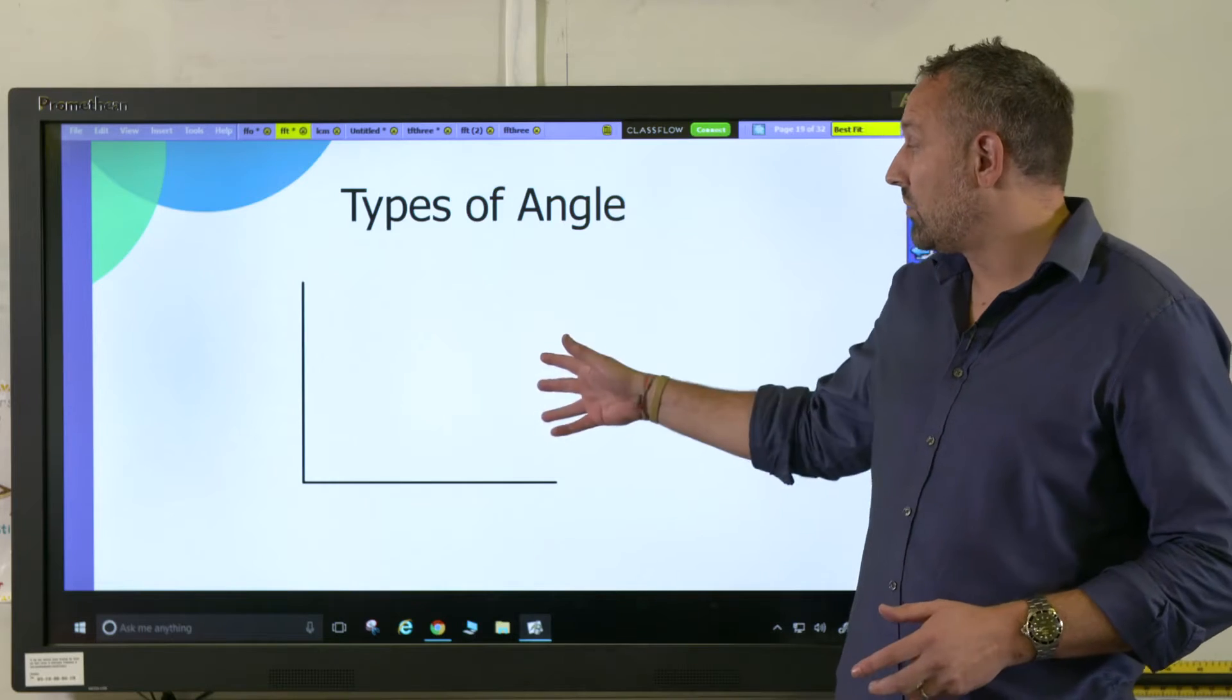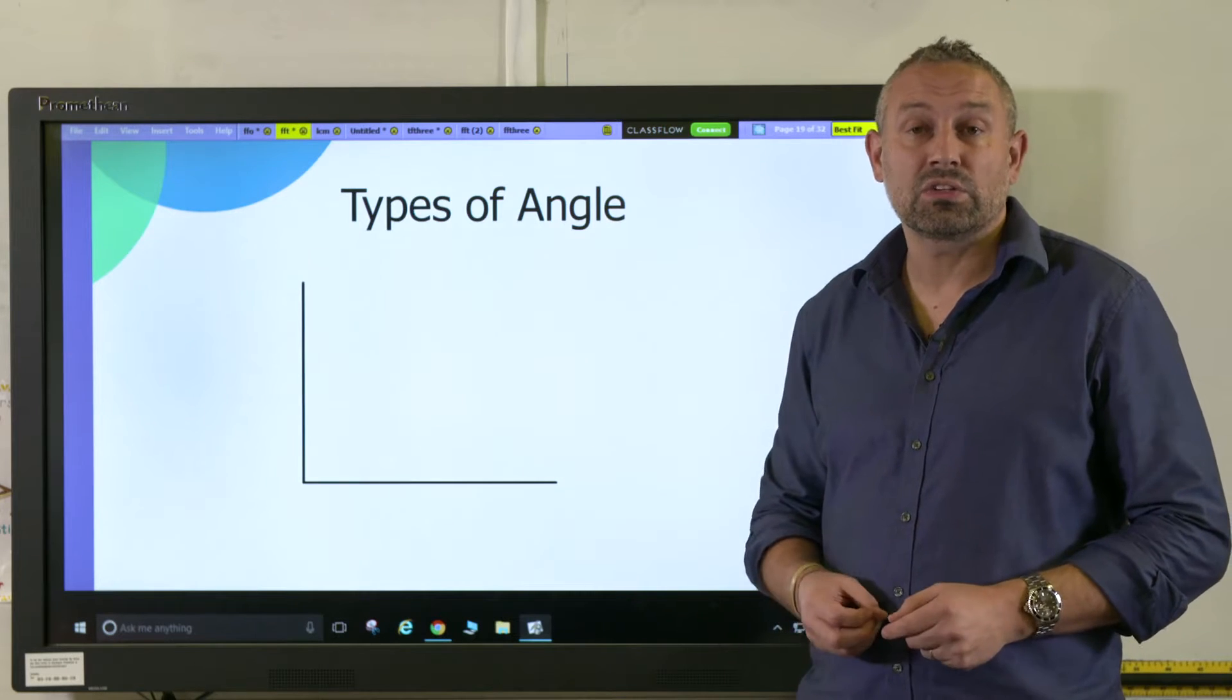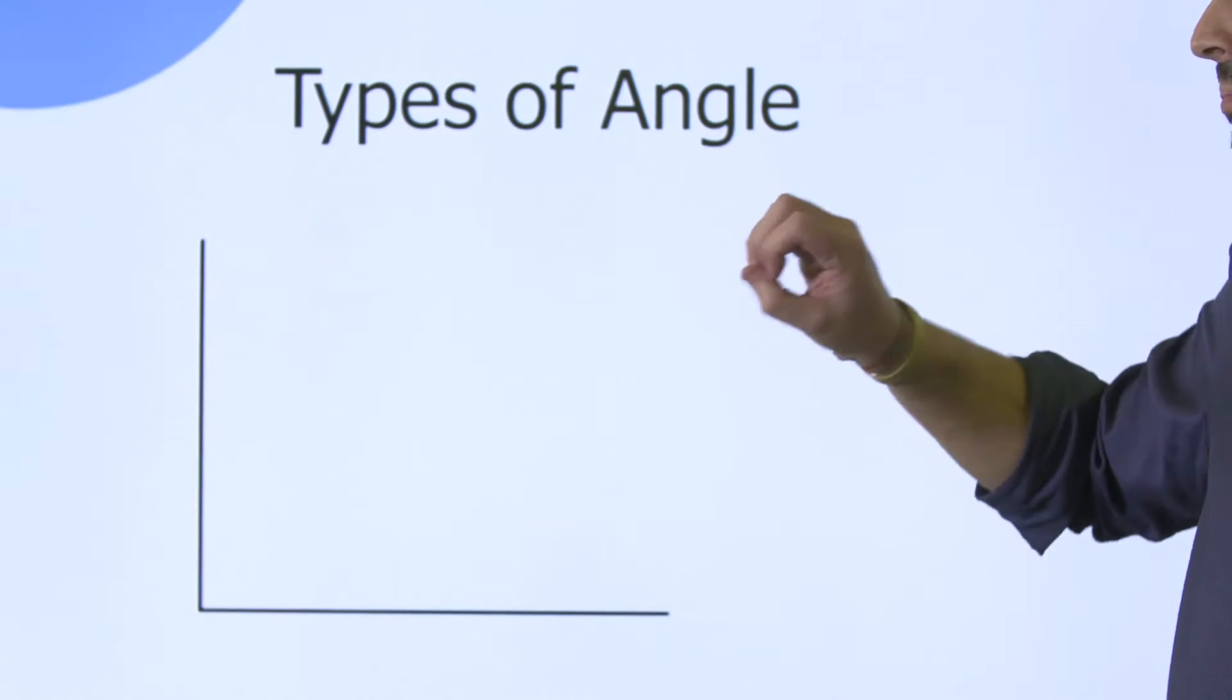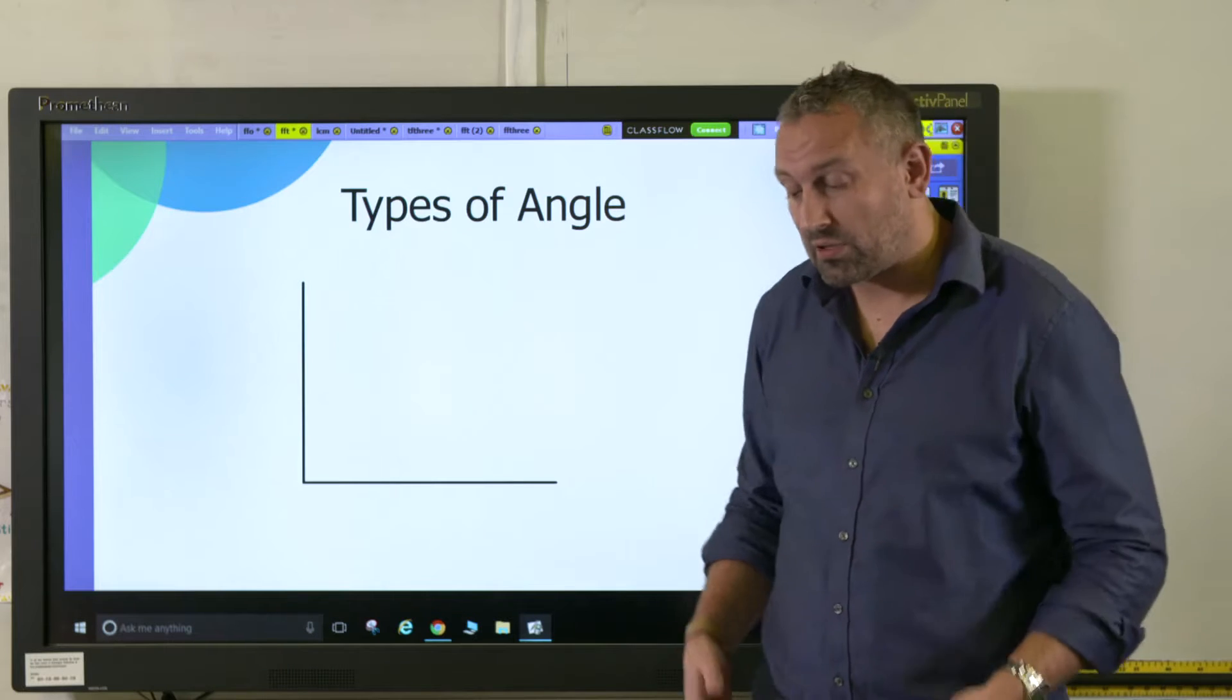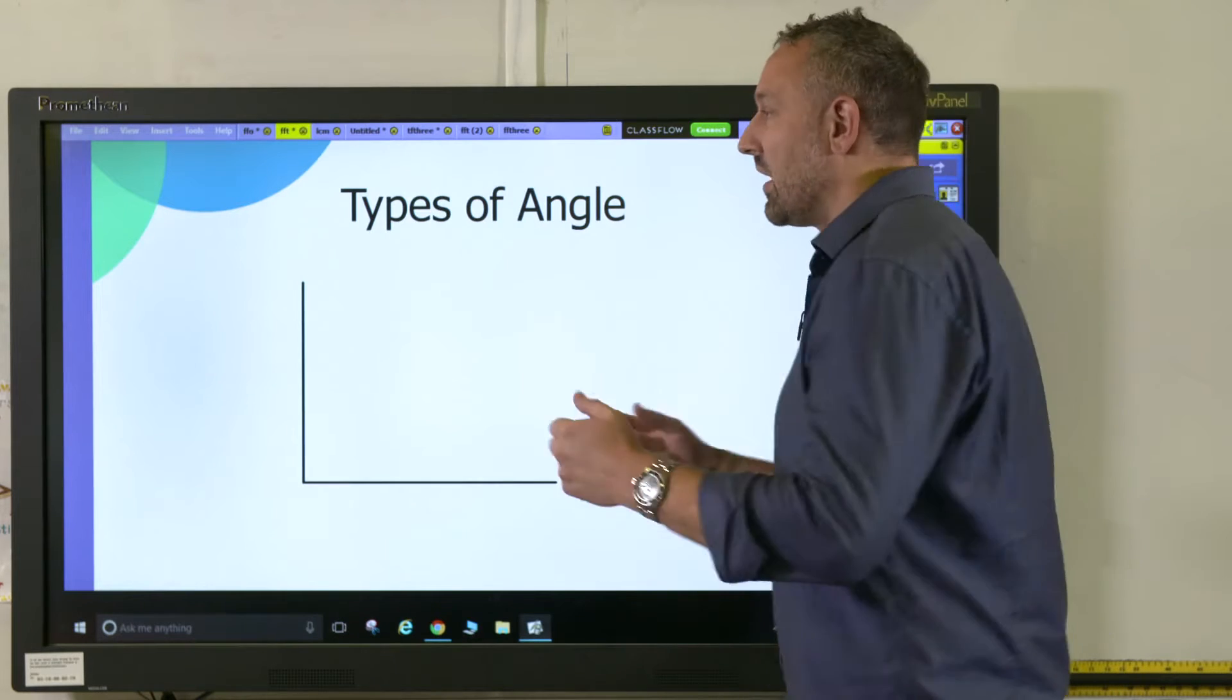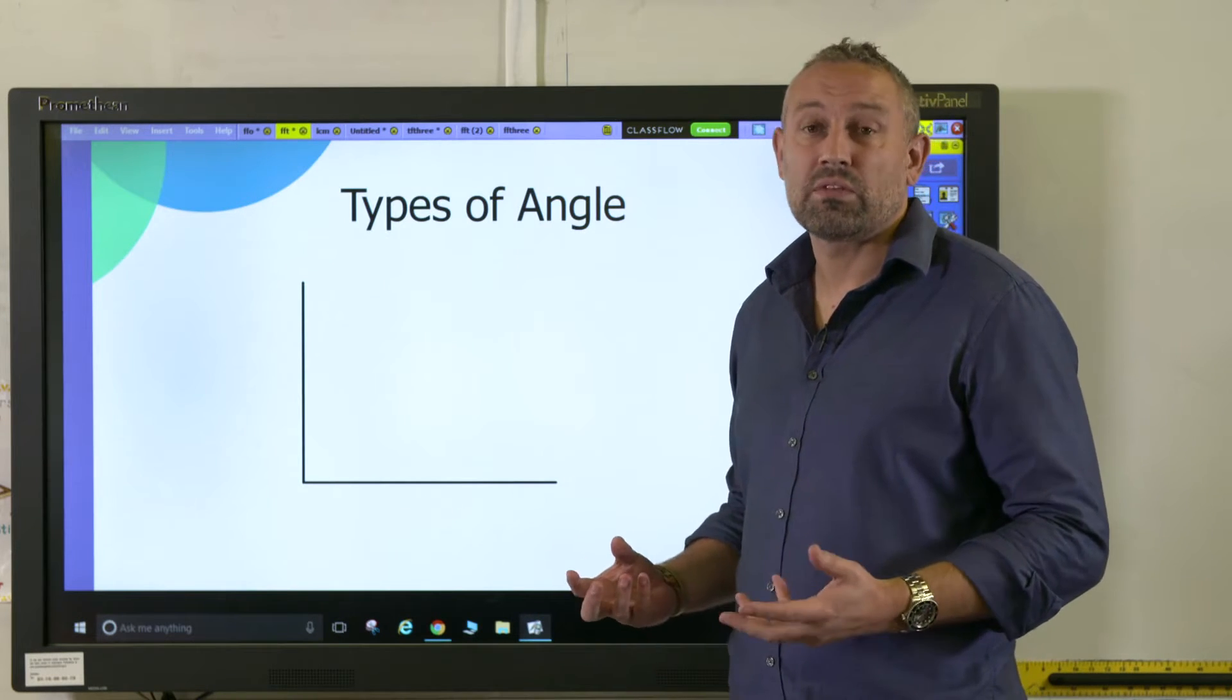Here's a different angle we can look at dynamically or statically. On the board or in their books it's static, but dynamic would be getting them to move. For example, I would get the children to stand up and they could move in a quarter turn. Getting them actively involved is a really useful way of teaching.